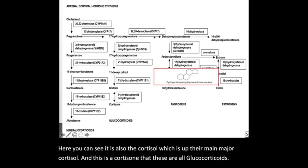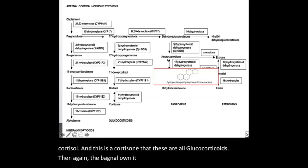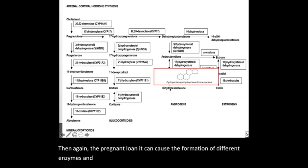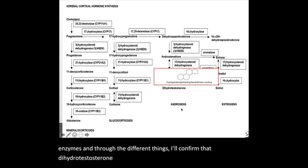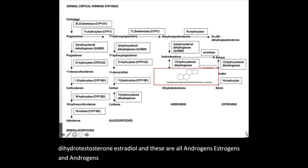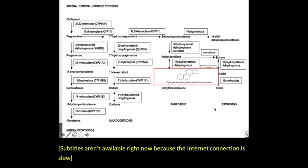Pregnenolone can also, through different enzymes, form dihydrotestosterone, estriol, and these are all androgens — estrogens and androgens, all sex hormones. So ACTH drives the formation of mineralocorticoids, glucocorticoids, and androgens through the rate-limiting step from the desmolase enzyme, all starting from cholesterol.